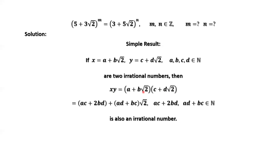We are going to use this result to solve our question. We can easily generalize the product to 3 numbers, 4 numbers, 8 numbers — we have the same result. If all numbers have this kind of format, the product is an irrational number.